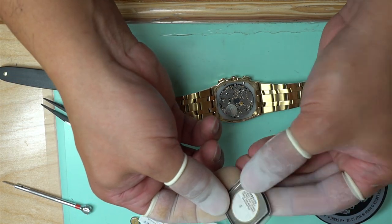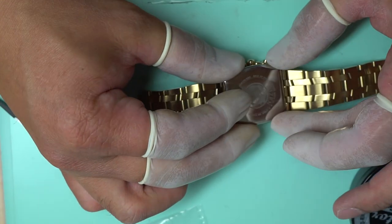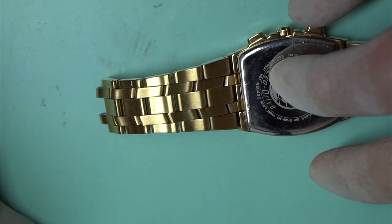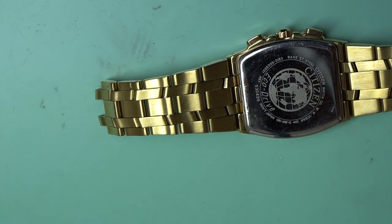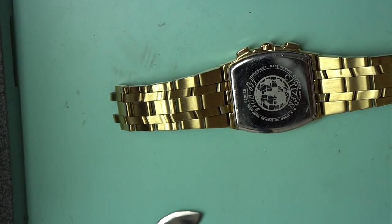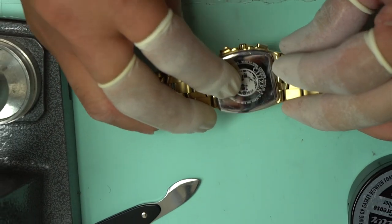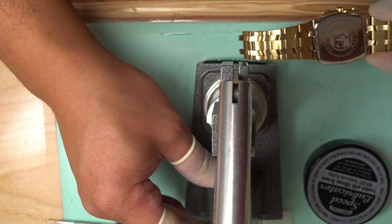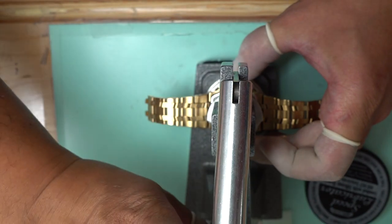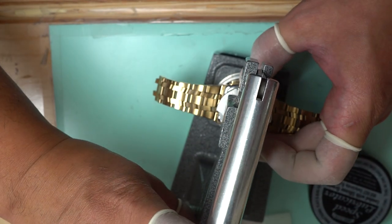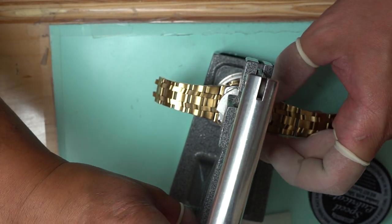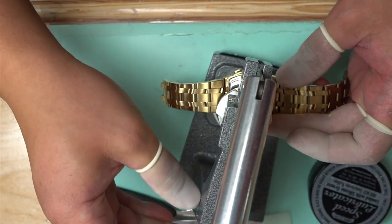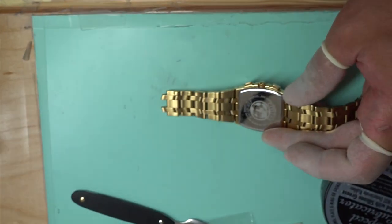Now that it's on securely, all we need to do is close the watch. The battery is now replaced. We're going to use the case back tool to close the back of the watch, and there you have it.